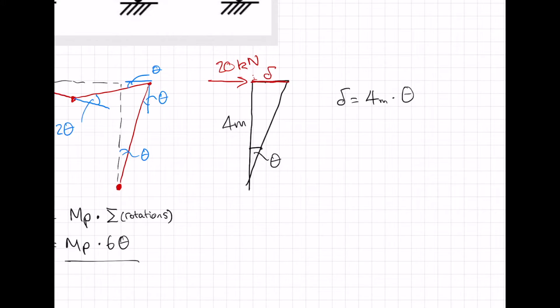That is four meters there, so we know delta is equal to four meters times theta. Work done here is 20 kilonewtons. Let's just convert this into newtons anyway. Times delta is equal to 20 kilojoules times four theta. So this one's 80 theta kilojoules.